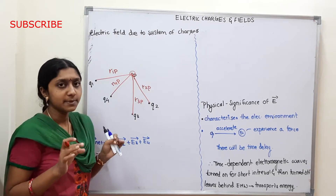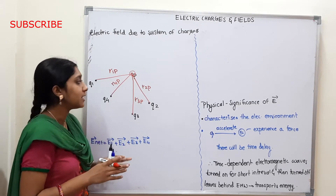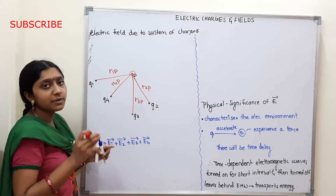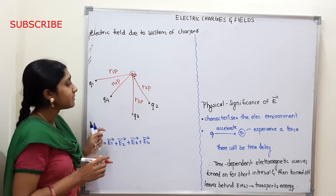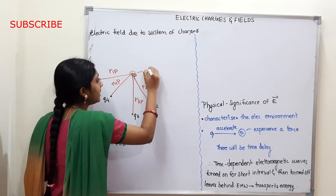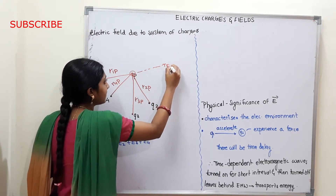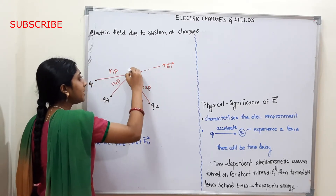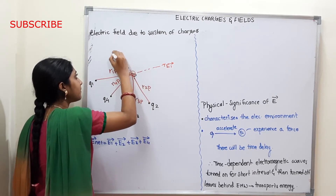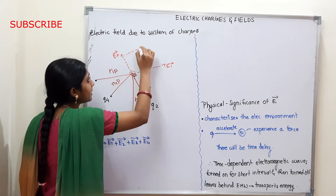Now, we know the electric field is a vector quantity. Since it is a vector quantity, we can use the parallelogram law of vector addition — it is applicable to vectors. So, first we have two adjacent sides. The electric field due to Q1 at P is E1, and the electric field due to Q2 is E2. Now, we complete this parallelogram.